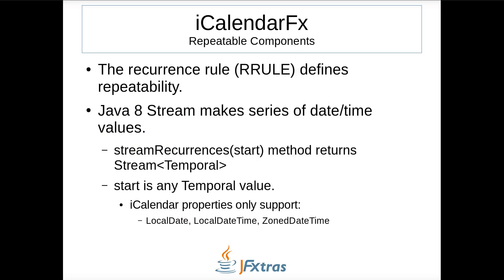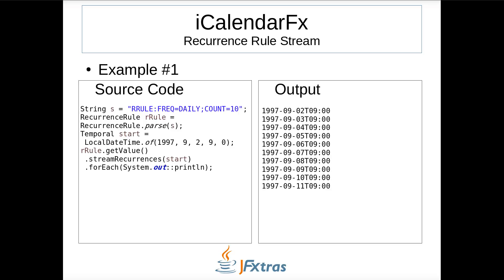Some calendar components can be repeatable. The repeatability is defined by using the recurrence rule property. Java 8 Streams is used to make the series of date-time values. The streamRecurrences method returns the stream. It has an argument that is a temporal — an interface defined in Java 8 time implemented by classes such as LocalDate, LocalDateTime, and ZonedDateTime. In this example, I define a recurrence rule with two elements — frequency and count. The streamRecurrences method returns a stream which then has its values displayed to the console. There are ten values one day after each other beginning at start.